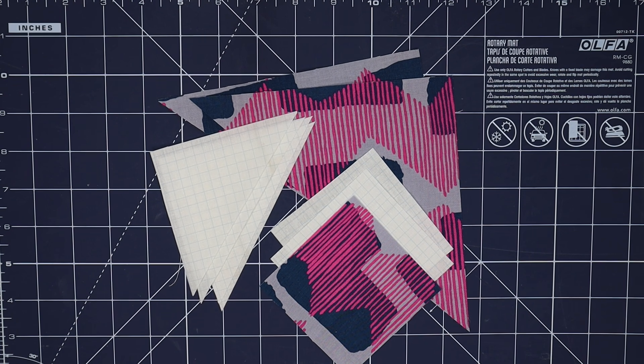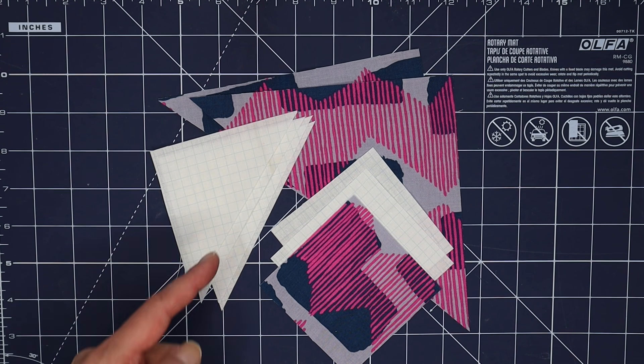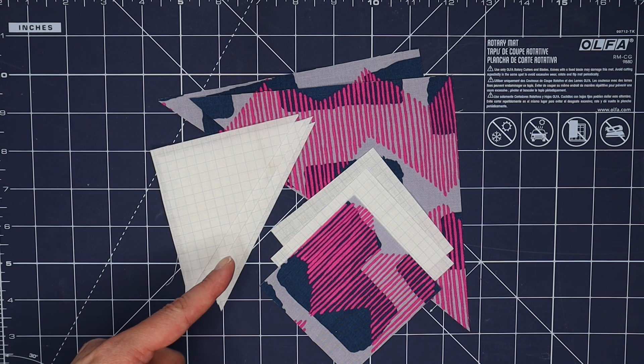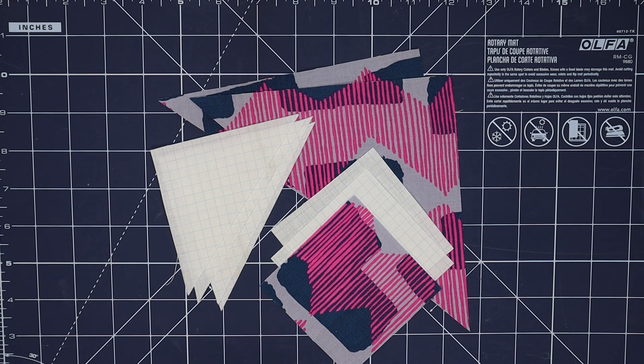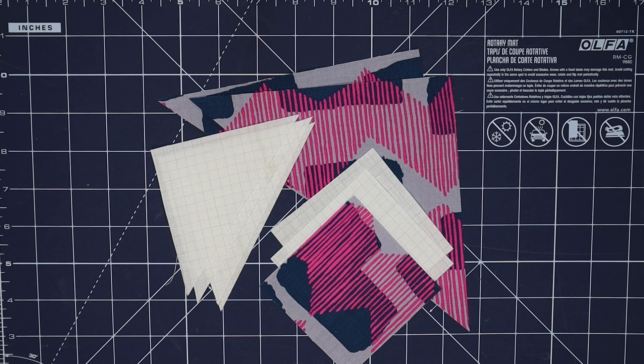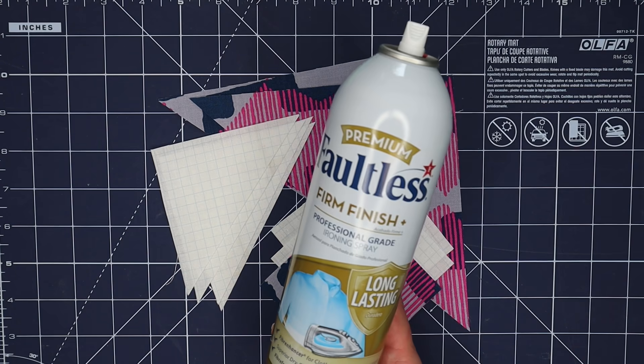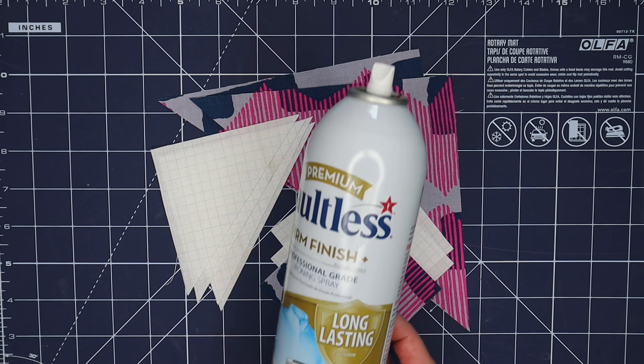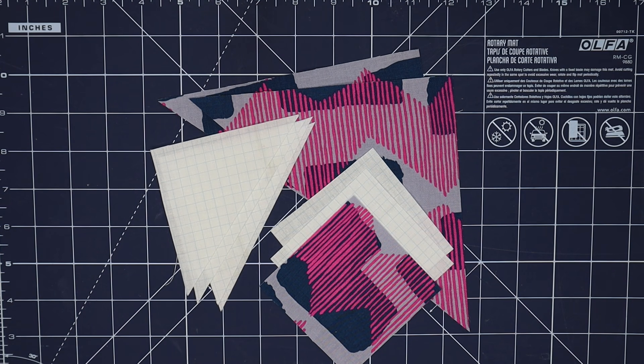Now this one has bias, and by bias I mean this edge is cut on the diagonal and tends to be stretchy when you're sewing. What I did to make sure that these are the easiest to sew with as possible is I've hit them with a little bit of starch as I was pressing before I even cut, and I just use plain old inexpensive easy to find starch.